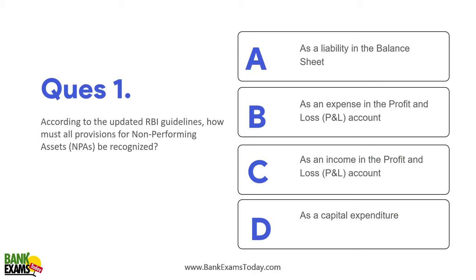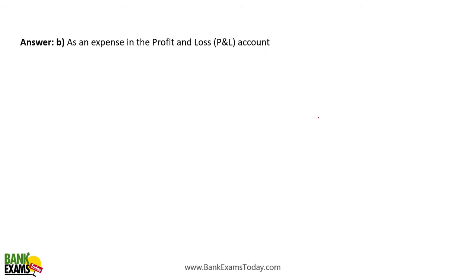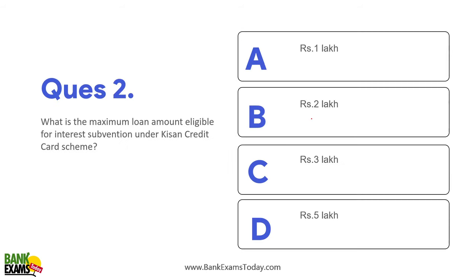According to the updated RBI guidelines, how must all provisions for non-performing assets be recognized? They must be recognized as an expense. This was specifically for cooperative banks. All provisions for non-performing assets must be treated as an expense for cooperative banks and cooperative societies.